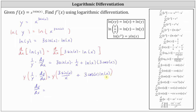We want the derivative in terms of just x, not x and y. So now we replace y with the original function. Remember y is equal to x to the power of three sine x. This gives us dy dx equals x to the power of three sine x times the quantity three sine x divided by x plus three cosine x natural log x.